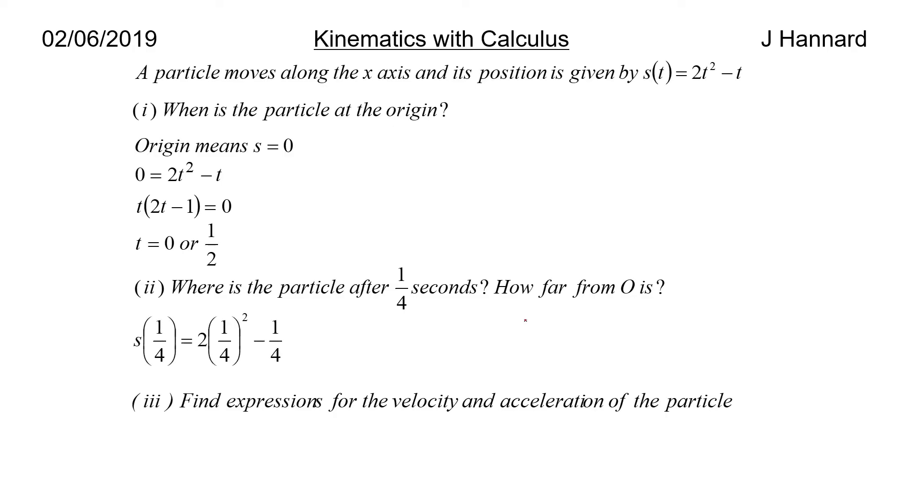Where is the particle after 1/4 seconds? How far from O is it? Well, you just stick a quarter into the s formula. So you get that, which is -1/8. And how far from O is it? So the displacement is -1/8. So how far is that? We think of it as just the numerical part of the answer. So it's 1/8 of a meter from O to the left because it's displacement. Remember, it's moving along the x-axis, so left or right. Find expressions for the velocity and acceleration of the particle. So v(t) is ds/dt. So we differentiate s(t) with respect to t and we get 4t - 1. And we do the same for a(t) and we just get 4. So it's constant acceleration, this question actually.